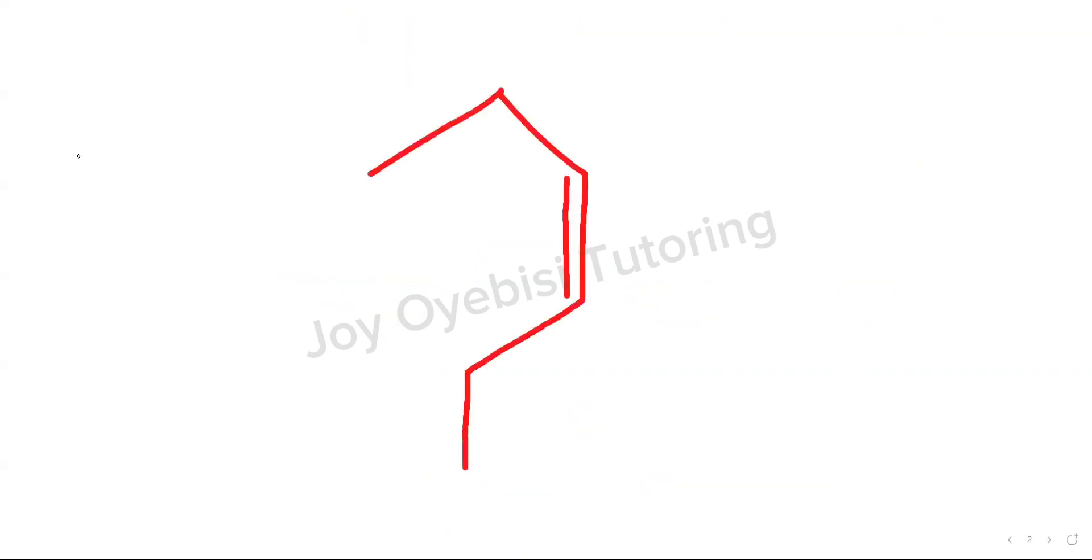Alkenes are unsaturated hydrocarbons with at least one carbon to carbon double bond. For this one, we have a straight chain. There are no substituents attached. There is no other functional group attached. So you can easily use the general formula of alkene, which is CnH2n.